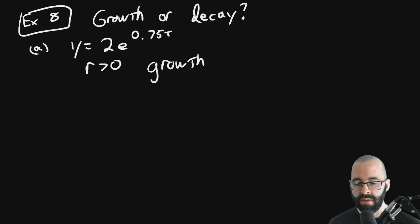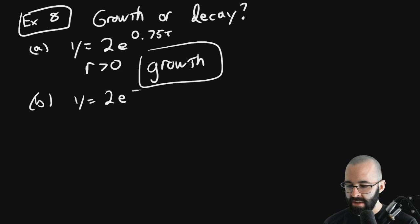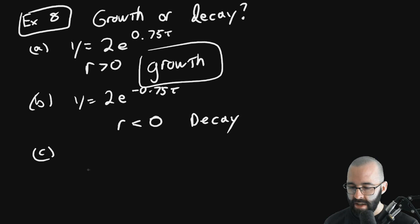Or B. Y = 2e^(-0.57t). Now R is negative. R is the coefficient of T up there. So it's going to be decaying. Check that with Desmos as well.